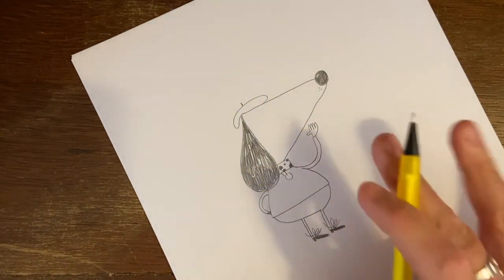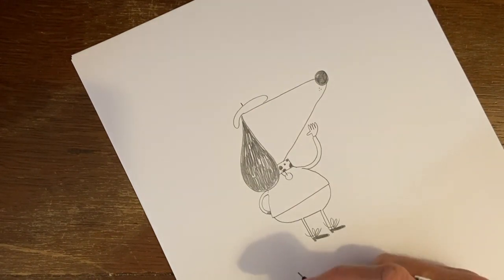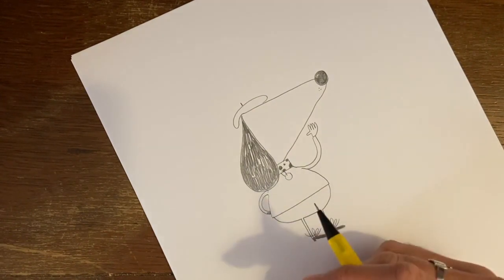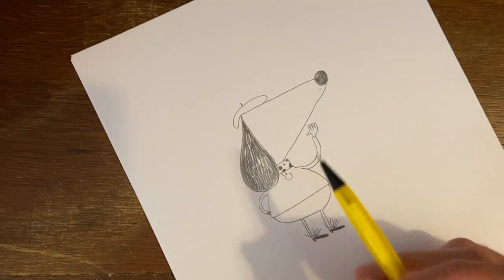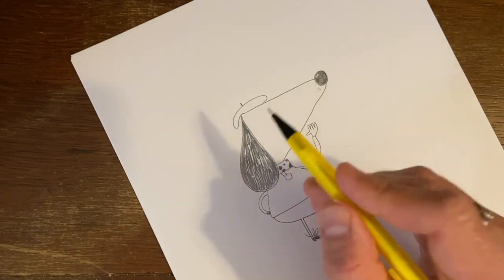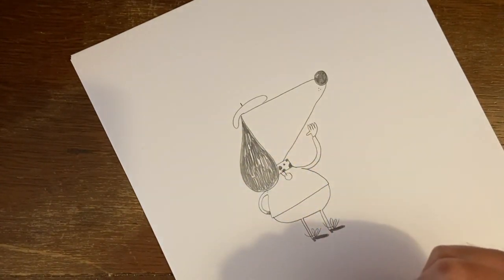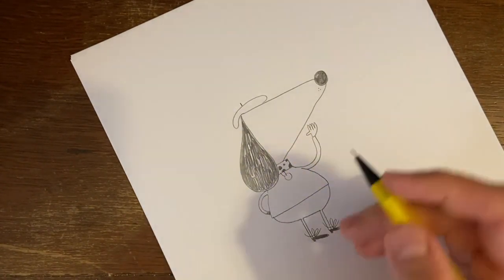Now we're going to draw his face now and I'm going to give you a top secret illustrators tip. We want Claude to be looking straight out at us. But we don't want him to look like a zombie, which there is a danger of that. If we drew two circles and put the dots right in the middle, he would look like a zombie. We don't want that.